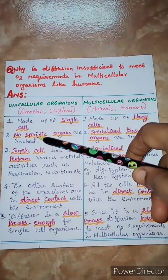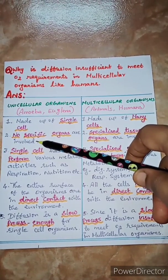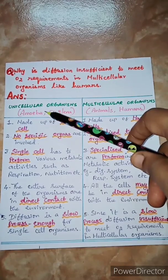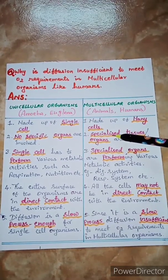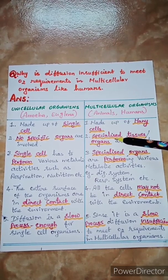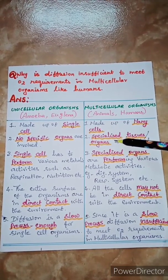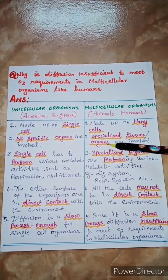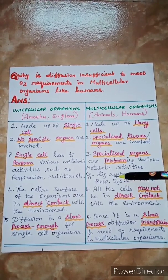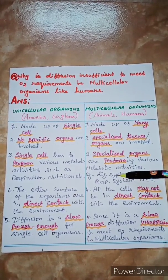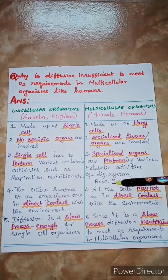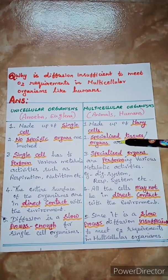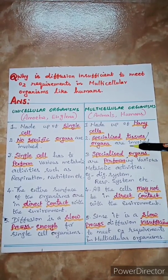Second one, there are no specific organs involved in unicellular organisms. But here, the specialized cells are grouped together to form tissues, the specialized tissues are grouped together to form organs, and the specialized organs are grouped together to form organ systems like the digestive system, respiratory system, etc. So here, specialized tissues or organs are involved.